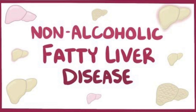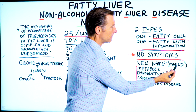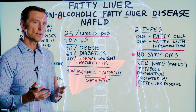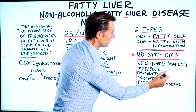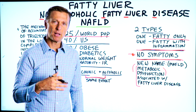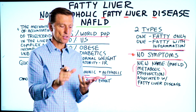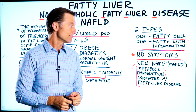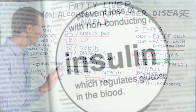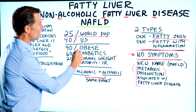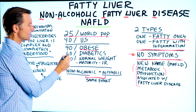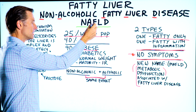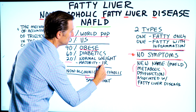They are trying to change the name of non-alcoholic fatty liver disease to MAFLD, which stands for metabolic dysfunction associated with fatty liver disease. The reason is this: metabolic dysfunction is really related to metabolic syndrome — syndrome X — where you have high blood pressure, high cholesterol, high blood glucose, and central obesity, which is exclusively caused by insulin. 90% of obese people have this, 60% of diabetics have this problem, and 20% of people with normal weight have this problem, with the majority having insulin resistance.